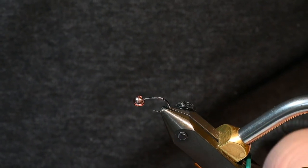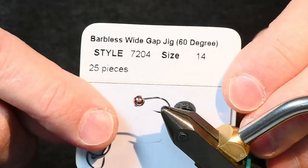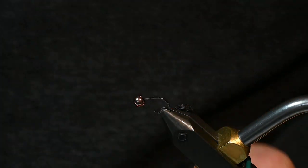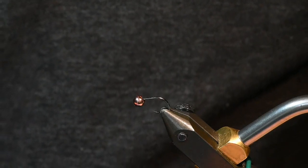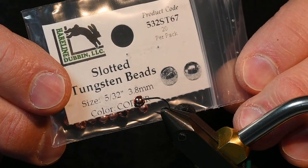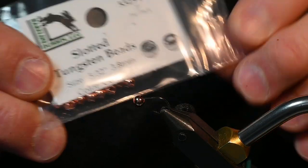This is the Montana Fly Company 7204 hook, and paired with that I'm using a slotted tungsten bead size 3.8 millimeter.